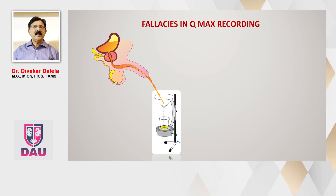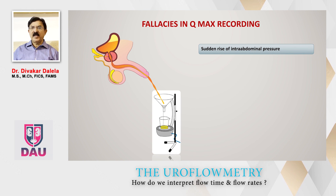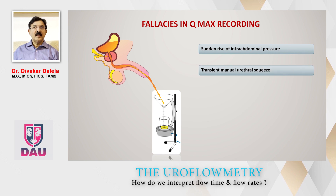Before interpreting Q-max data from the uroflowmetry report, you should know the things that can introduce fallacy. If there is a sudden rise of intra-abdominal pressure while the patient is passing urine — such as sneezing, coughing, or voluntary straining — the peak will go up briefly. Or if the patient does a transient manual urethral squeeze: some people habitually massage their urethra while passing urine. In that case, the flow stops while the urethra is occluded, and when it opens a jet of flow comes out, giving a falsely high flow rate.